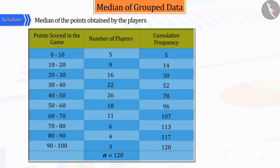You can see that, here, n is equal to 120, which is an even number. Therefore, if the number of observations is even, the median observation will be n by 2.